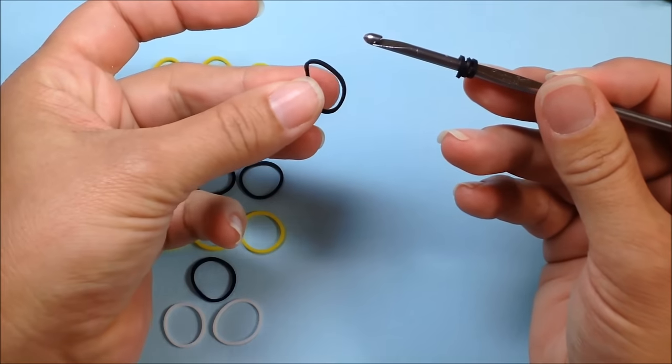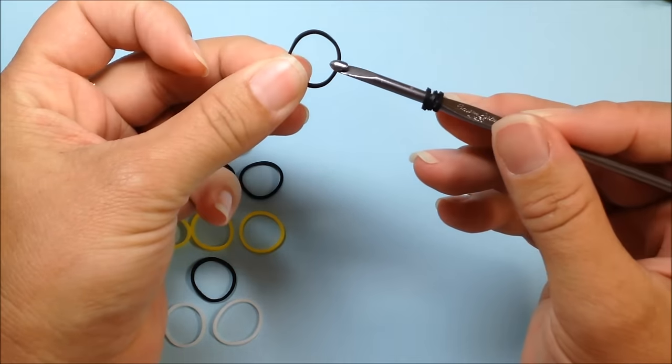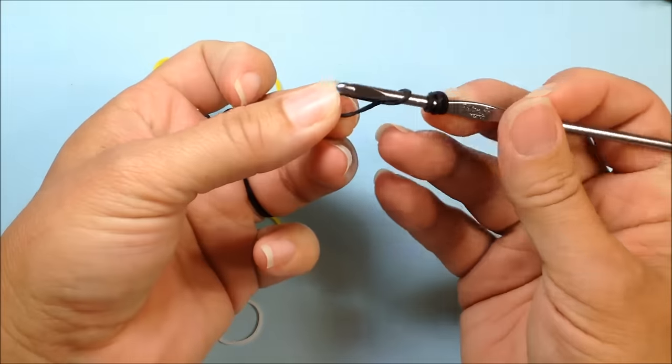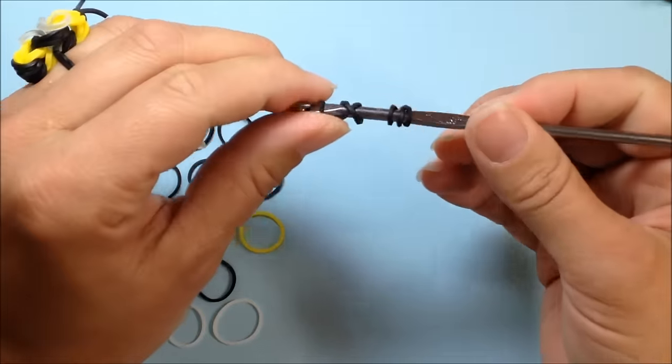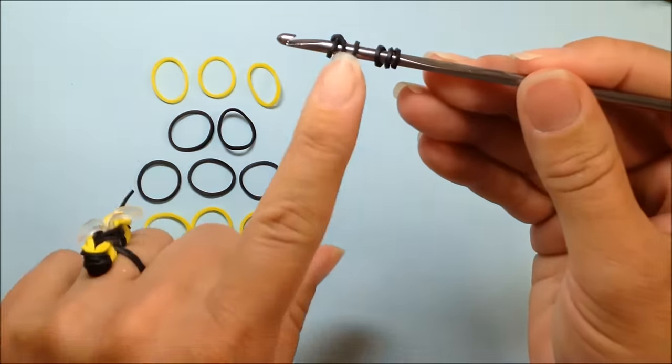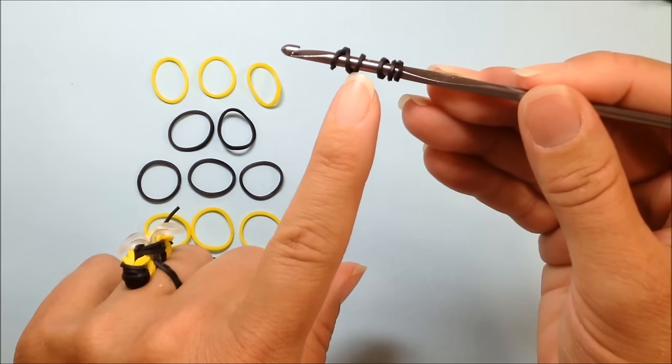Your next black band will be the same situation. One, two, and three. So that there looks like there are three bands on your hook.